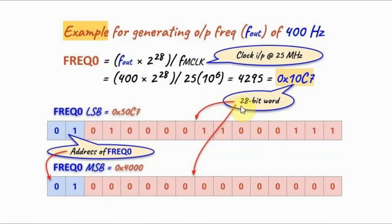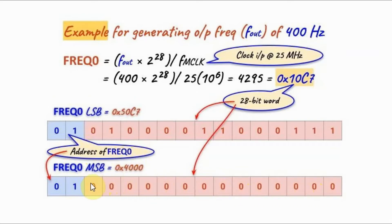Next, we store this 28-bit value inside frequency register 0 by creating two 16-bit values. The first is made of the least significant 14 bits of the frequency value, with the address of frequency register 0 (01 in binary) added at the most significant side. The remaining 14 most significant bits are then combined with the address to form the second 16-bit number.